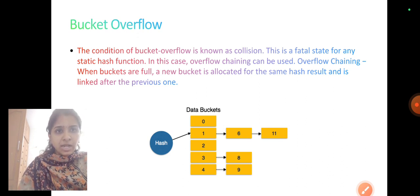There are data buckets like 0, 1, 2, 3, 4. Whenever the condition of bucket overflow occurs, a collision happens. To overcome this, overflow chaining is used. When buckets are full a new bucket is allocated for the same hash result. For example, data bucket 1.